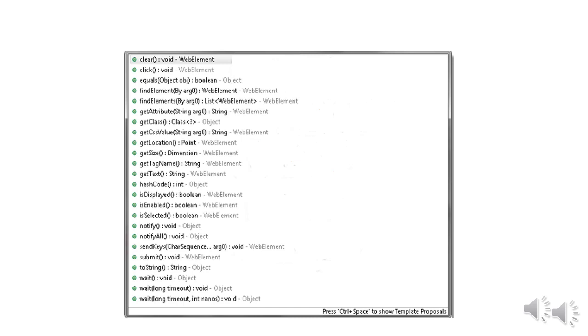A WebElement can be used as a boolean. findElement returns a WebElement, and findElements returns a list of elements by argument. You can get attributes — declared as a string — get the location, get the CSS style sheet value, get the tag name, get the text, and even get the hash code. You can check whether the element is displayed, enabled, or disabled, and whether it is selected or not. You can also send keys and submit.